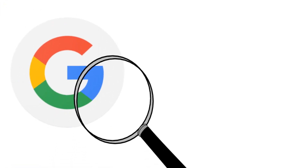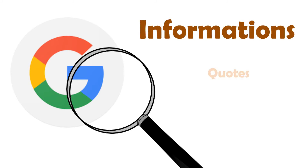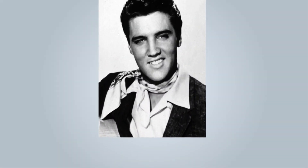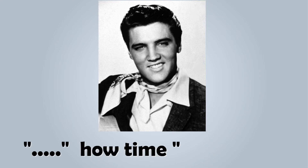This tip might come in handy when we use Google search. Sometimes we do tend to forget a few words, especially when we try to remember old information, quotes, or maybe old songs. Let's look at one more example. Let's say we want to remember an old Elvis song, and we can only remember 'something...how time...something...away.'